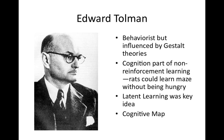Edward Tolman was a behaviorist heavily influenced by Gestalt theories. He looked at cognition as part of non-reinforcement learning — rats could learn mazes without being hungry. He came up with the idea of latent learning and also created the concept of the cognitive map.